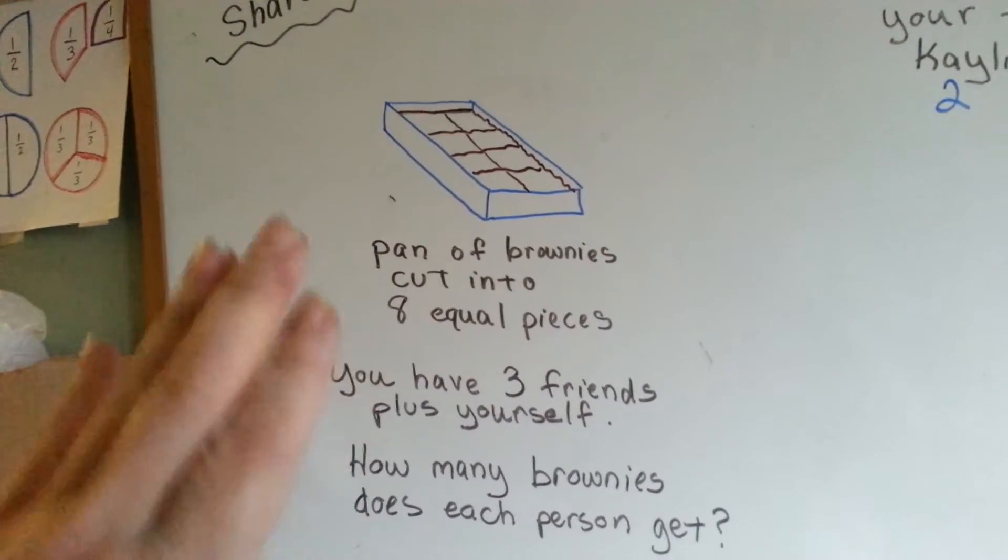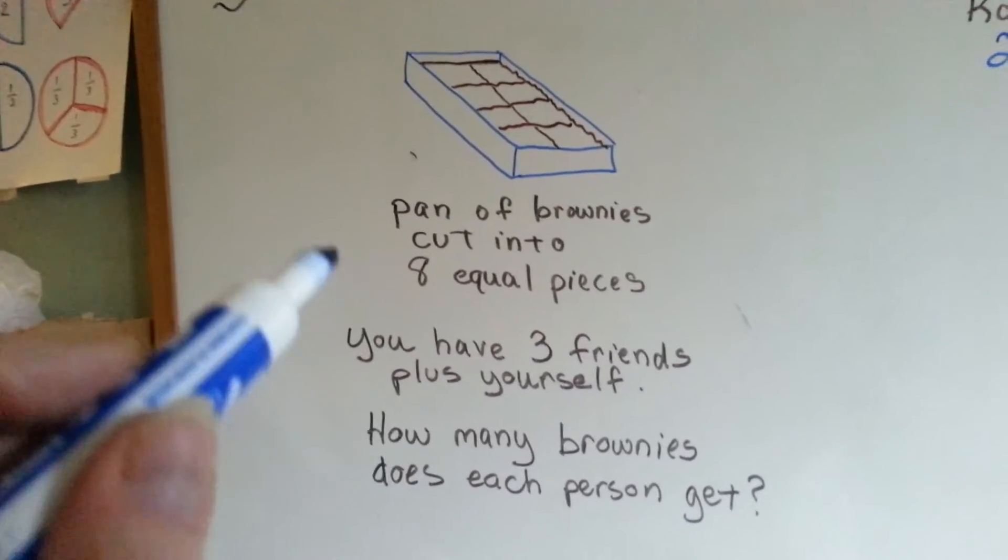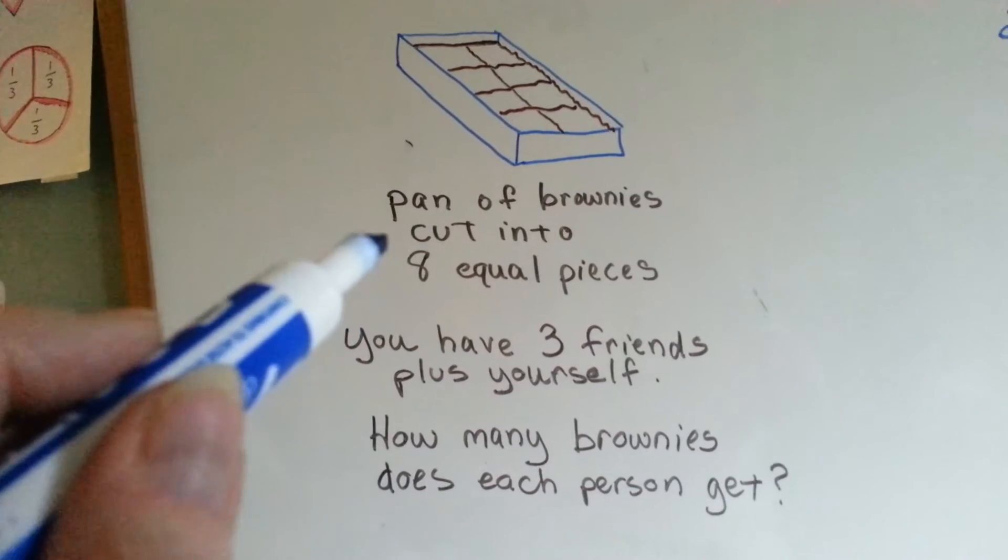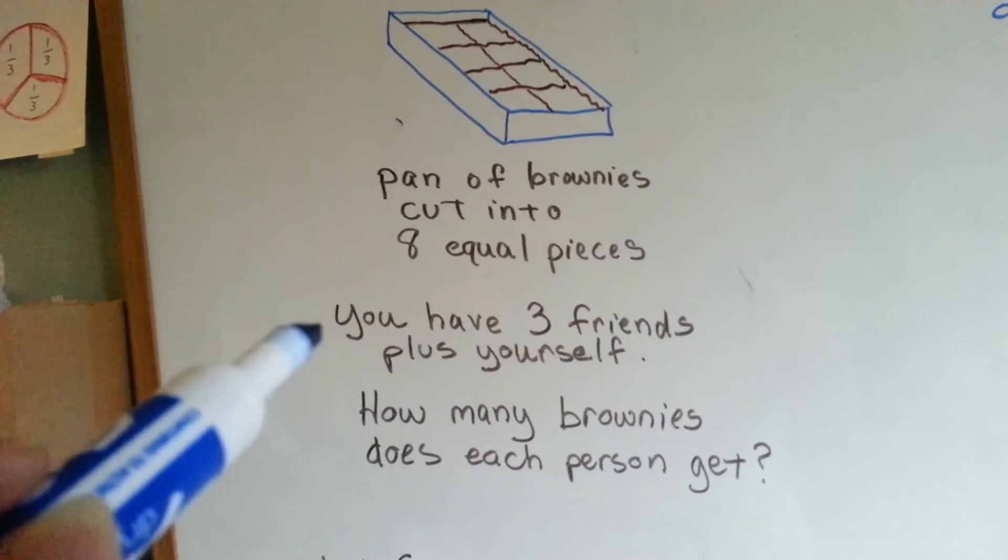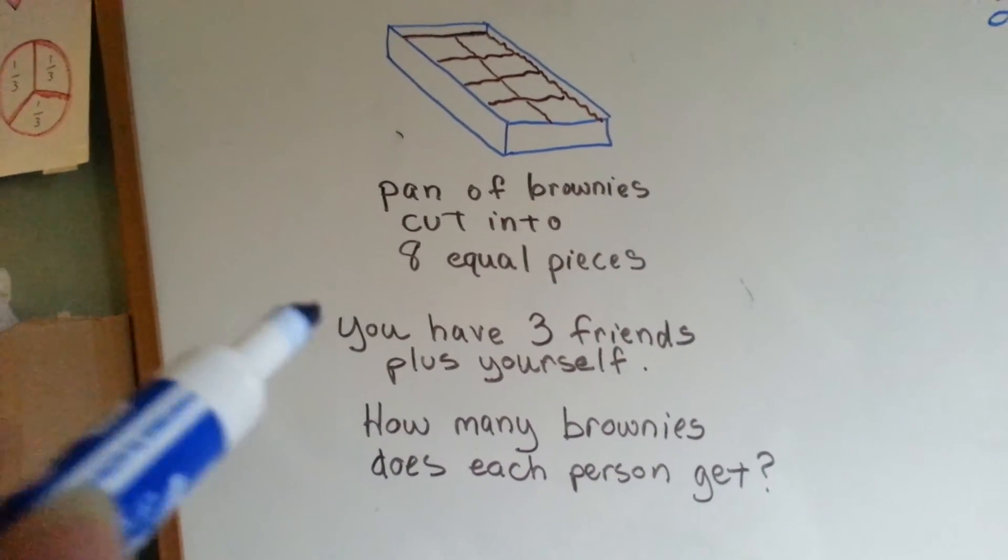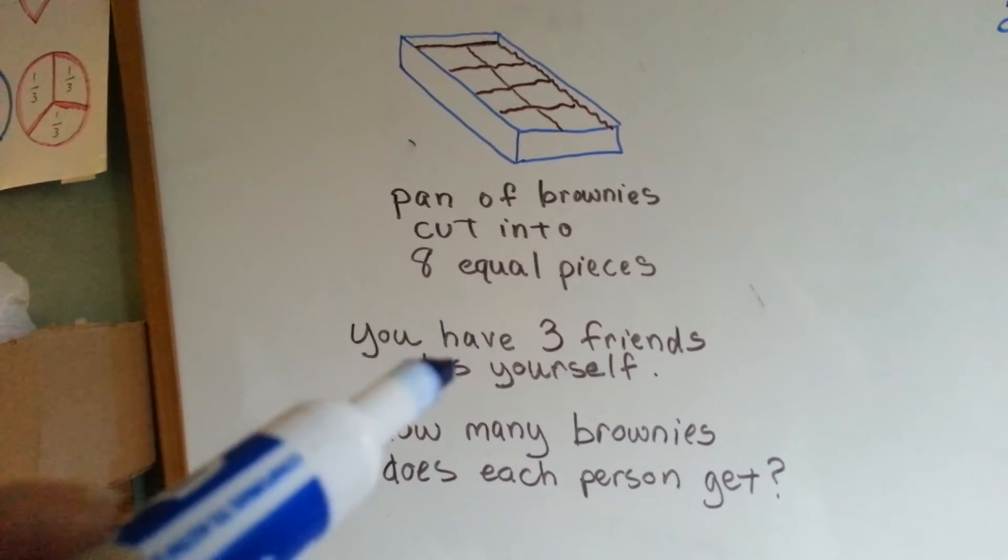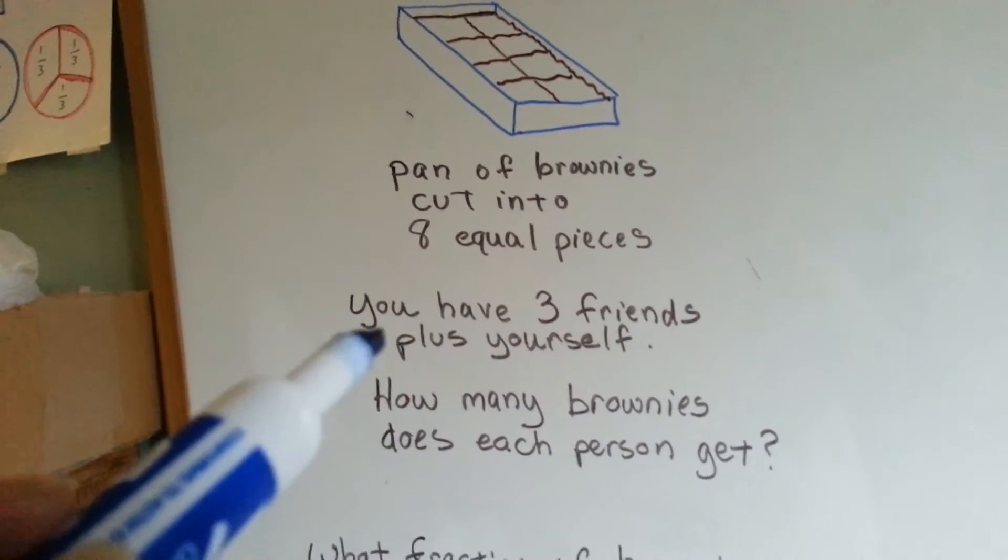And your mom tried to cut them as evenly as possible so that one person doesn't have a bigger piece than the other. So there's a pan of brownies cut into eight equal pieces. You have three friends plus yourself.